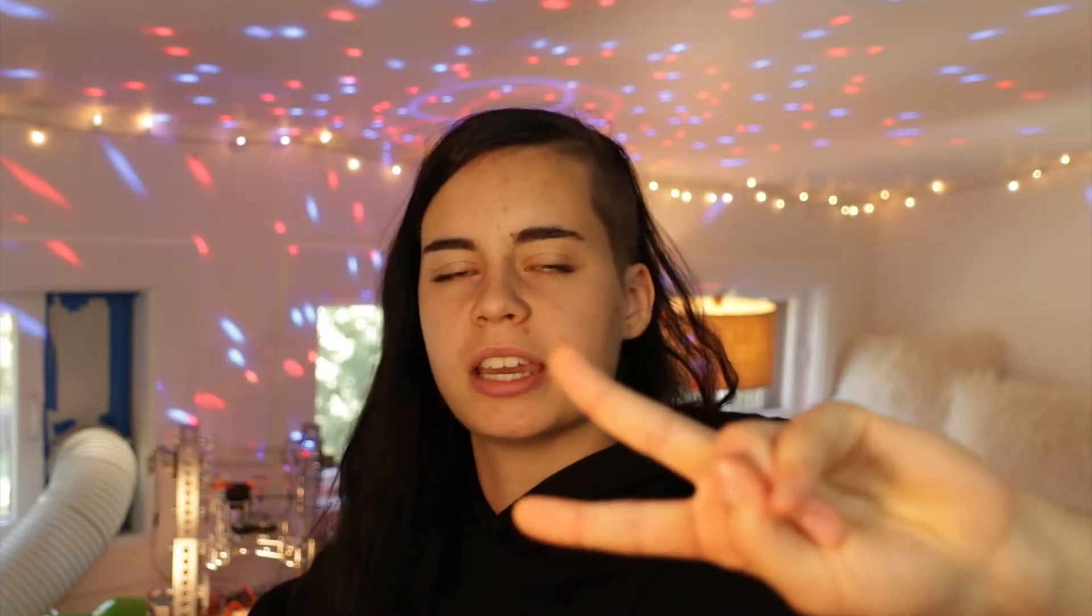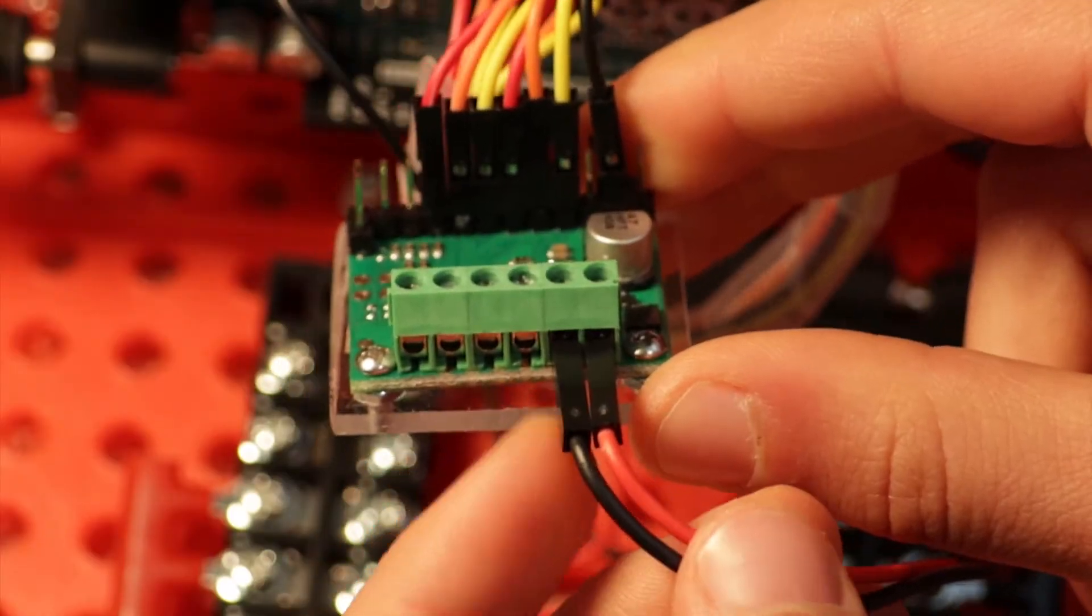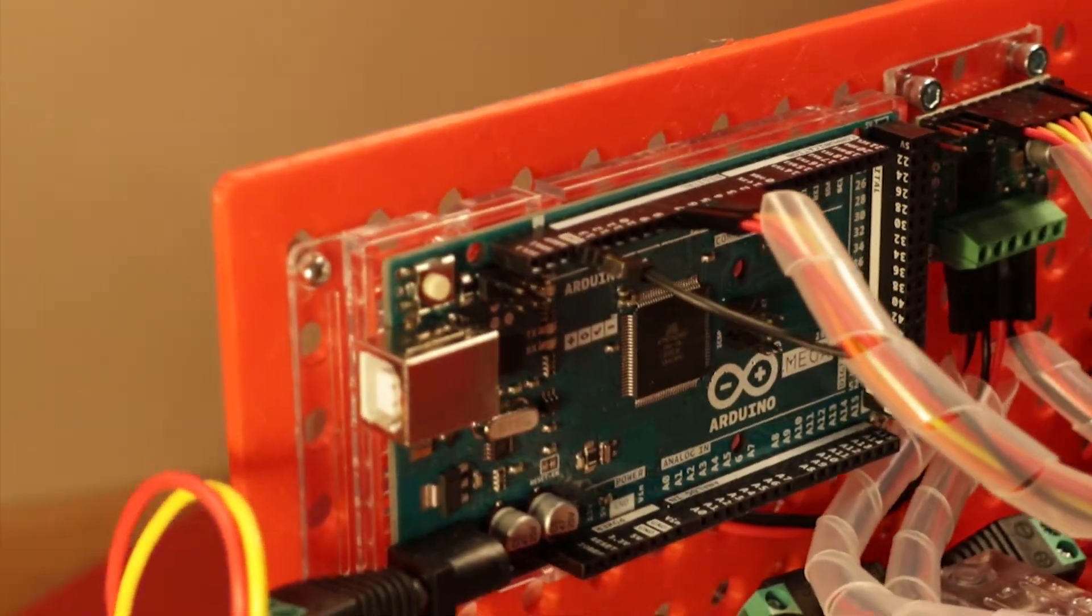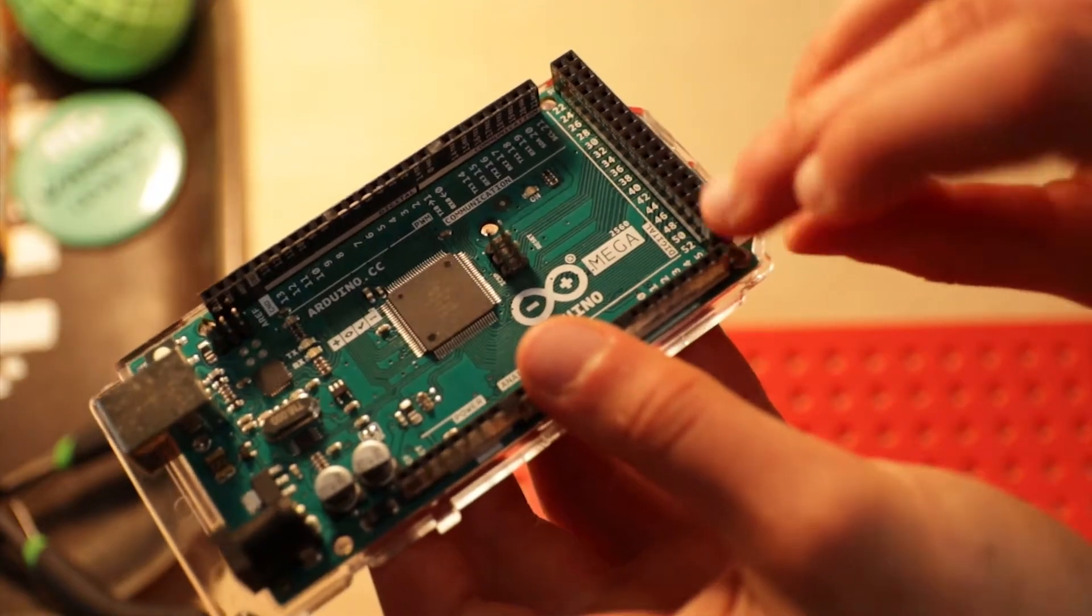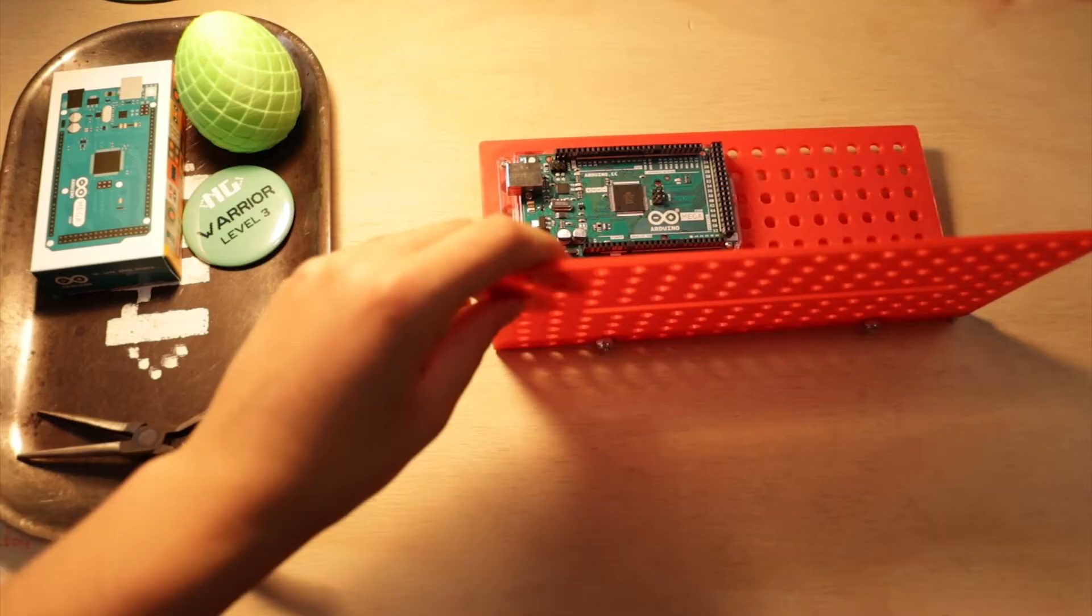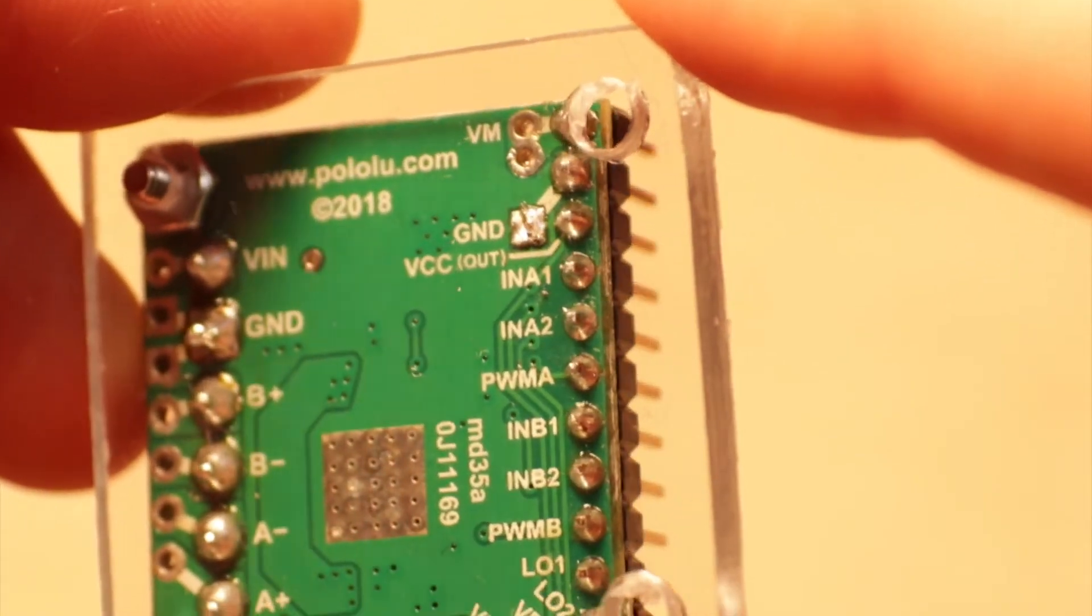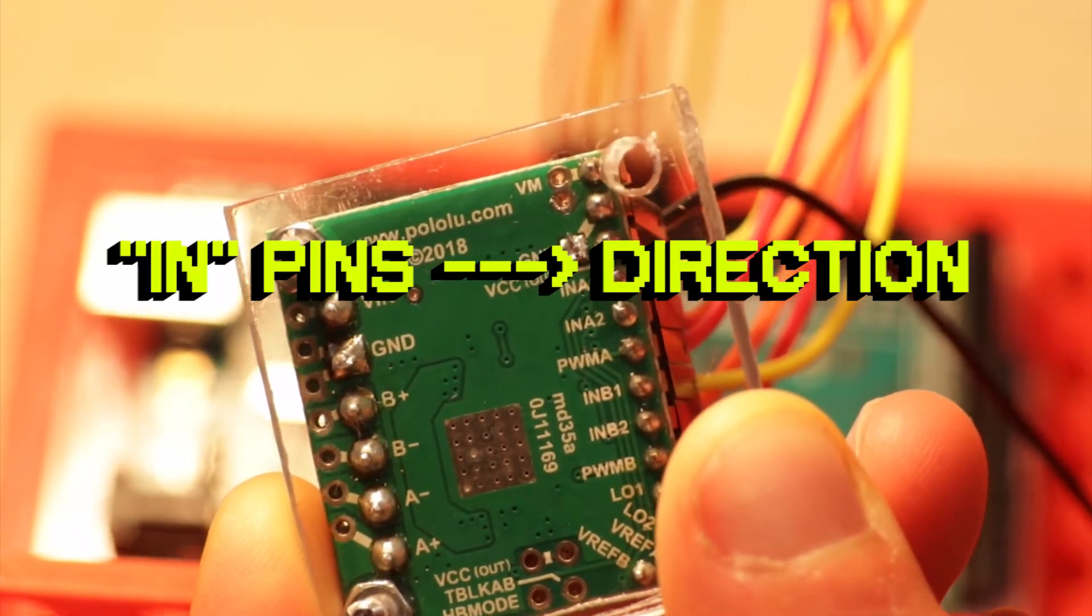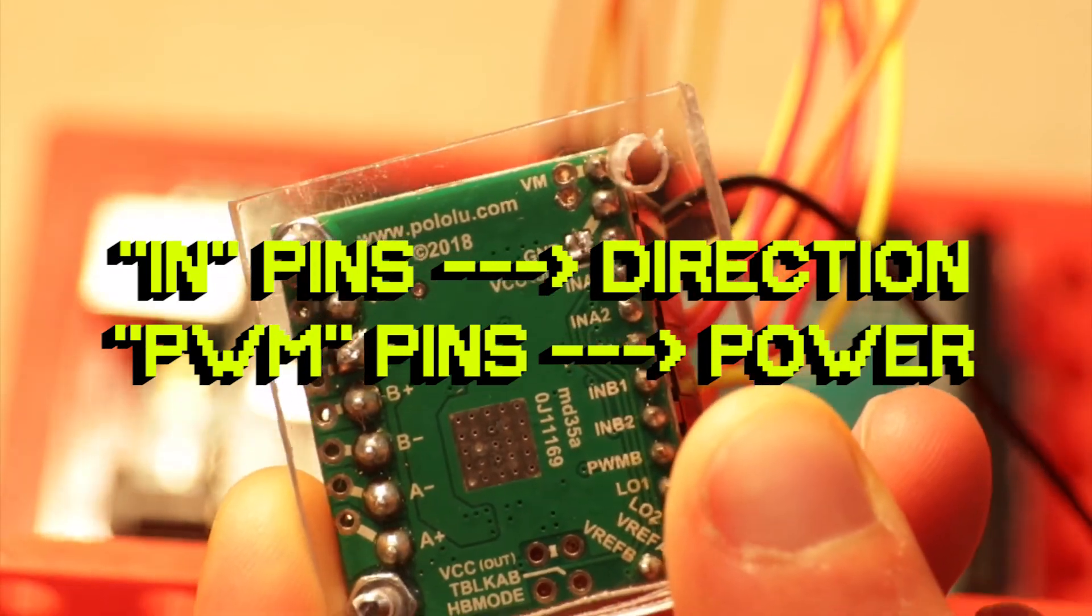First step is to connect two things: our brain, which is the Arduino Mega 2560 board, and the muscle, aka this motor driver from Pololu, which is in charge of getting commands from the Arduino and turning them into moving the motors. Mount that Arduino with either zip ties or mounting screws in the upper left corner of the vertical electrical board. Now there are three pins in charge of controlling each motor on our motor driver: inputs one and two, and a PWM pin. All you need to know for now is that the input pins are in charge of controlling motor direction, and the PWM pin controls the amount of power going to the motor.